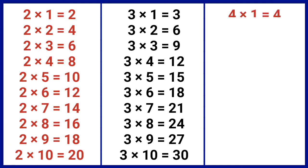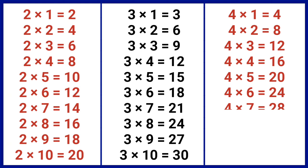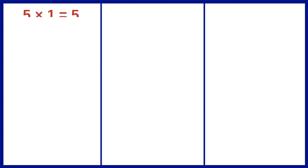4 1s are 4, 4 2s are 8, 4 3s are 12, 4 4s are 16, 4 5s are 20, 4 6s are 24, 4 7s are 28, 4 8s are 32, 4 9s are 36, 4 10s are 40.